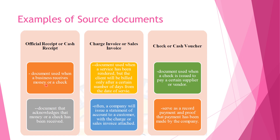When you say official receipt, commonly known as OR, this is the document used when a business receives money or a check — it acknowledges that money or a check has been received. Official receipt is used when you acquire a service from a company; they provide you an OR as you pay them. For charge invoice or sales invoice, this document is used when a service has been rendered but the client will be billed only after a certain number of days from the date of service. A company will often issue a statement of account with a charge or sales invoice attached — sales invoice for goods and official receipt for services.